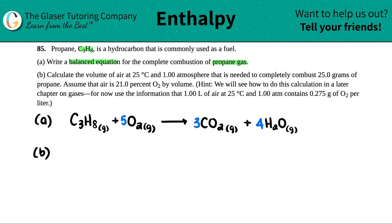Moving on to letter B: calculate the volume of air at 25°C and 1 atm needed to completely combust 25.0 grams of propane. Assume air is 21.0% O₂ by volume. The hint says we'll cover this fully in a later chapter on gases, but for now use the fact that one liter of air at 25°C and 1 atm contains 0.275 grams of O₂ per liter.